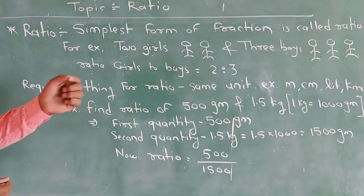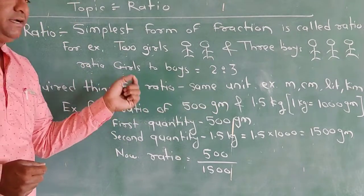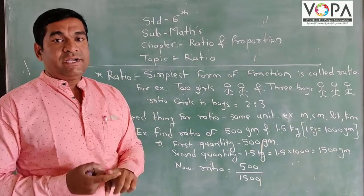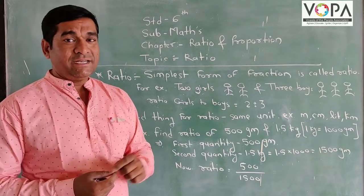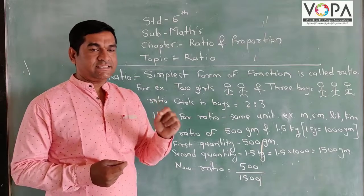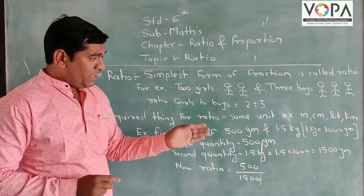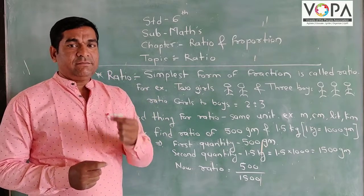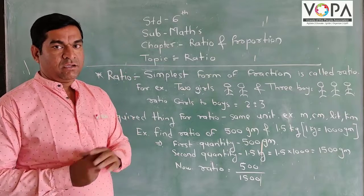Right now, what things are required for ratio? Quantities should be the same. Quantity means unit - unit should be the same. Whenever we compare two or more things, they must have the same unit.